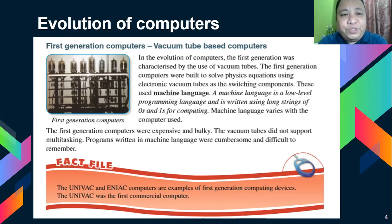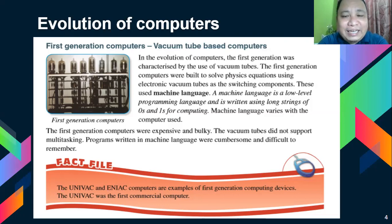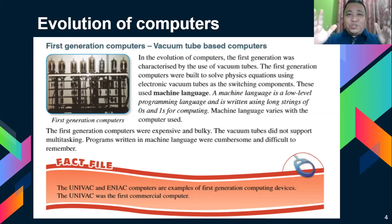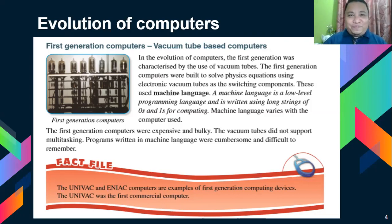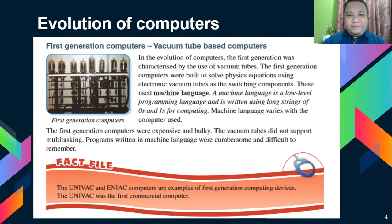Machine language varies with the way the computer is used. The first generation computers were expensive and bulky. The vacuum tube did not support multitasking. Programs written in machine language were cumbersome and difficult to remember. Imagine — the computer before was as big as this classroom, and it was used only to calculate numbers — simple addition and subtraction.